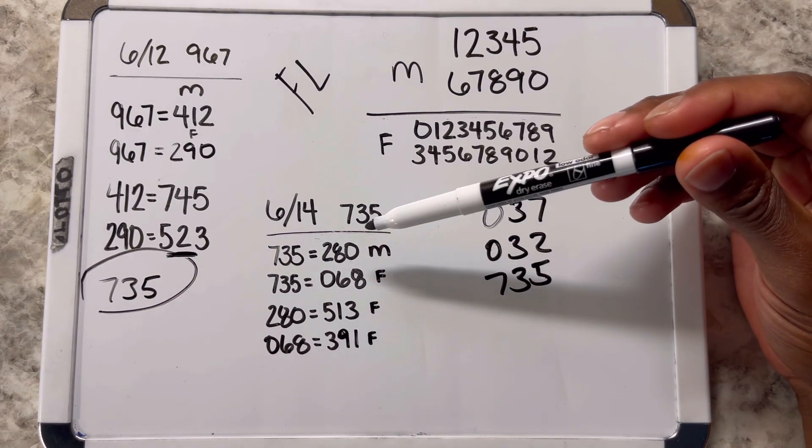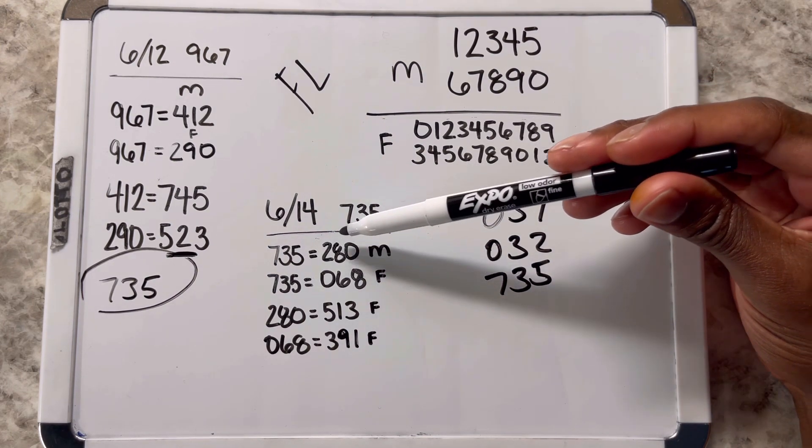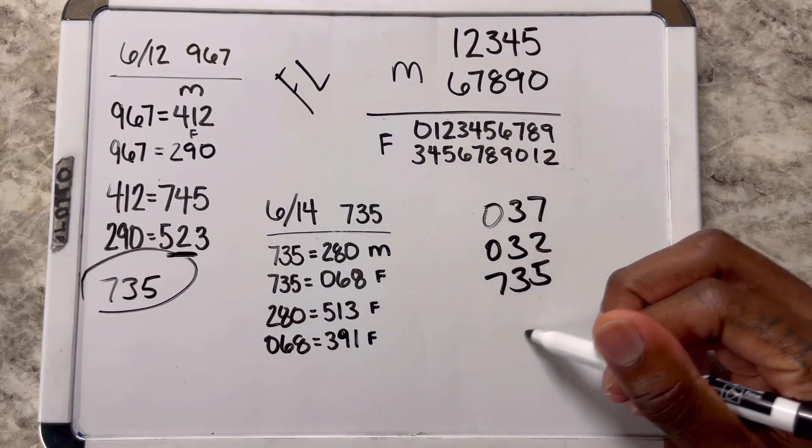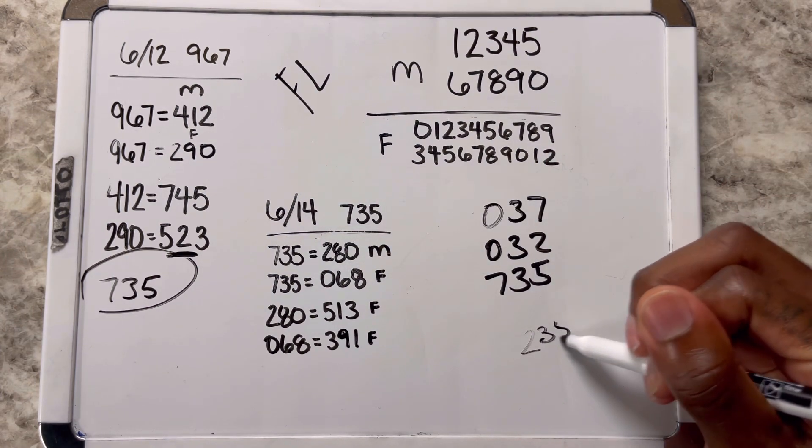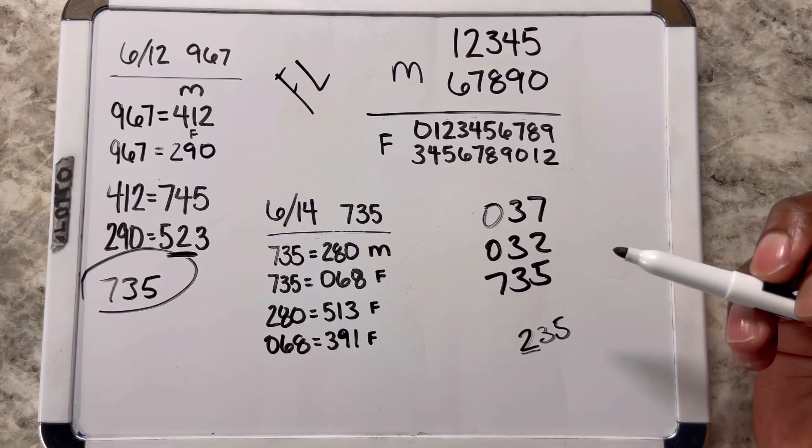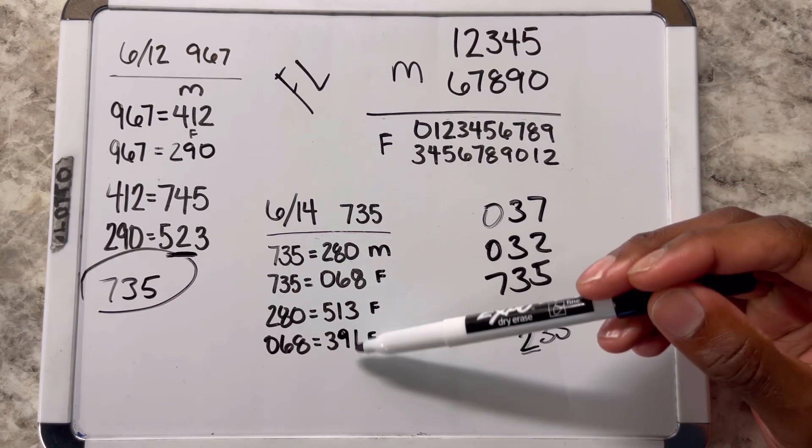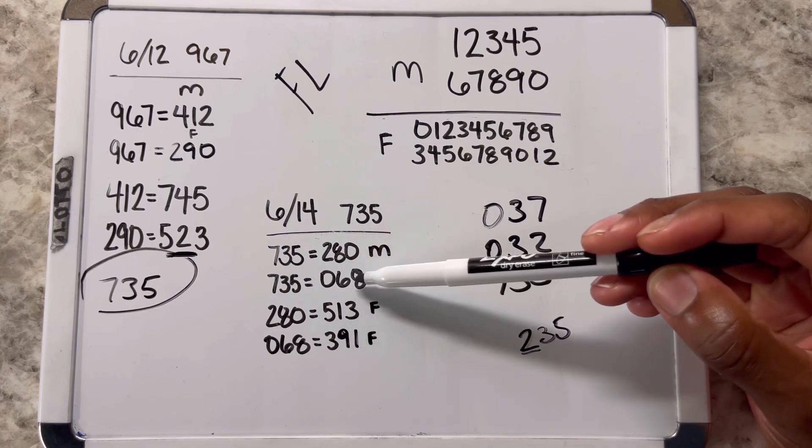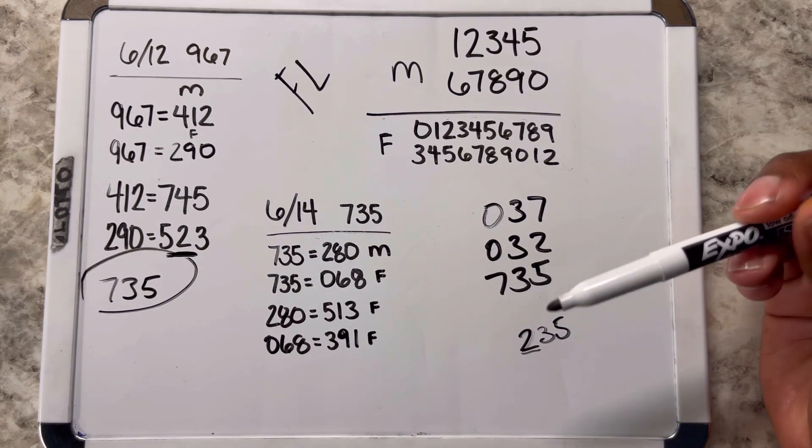If you continue to pay attention, that 280 should be next or at 235. You can run any of these other three numbers. Basically these are the same.